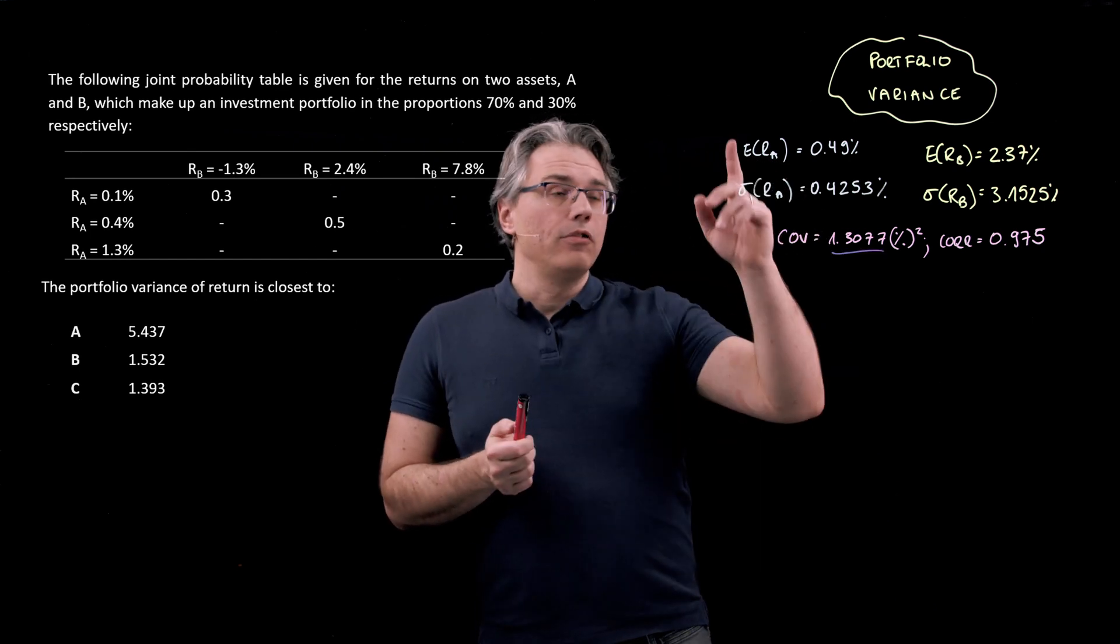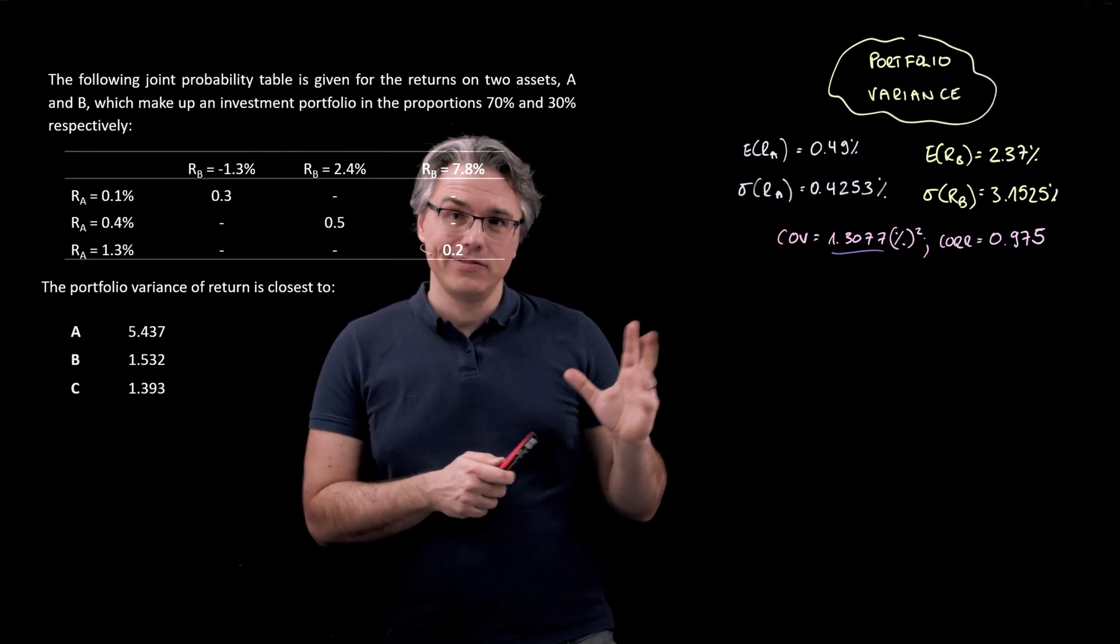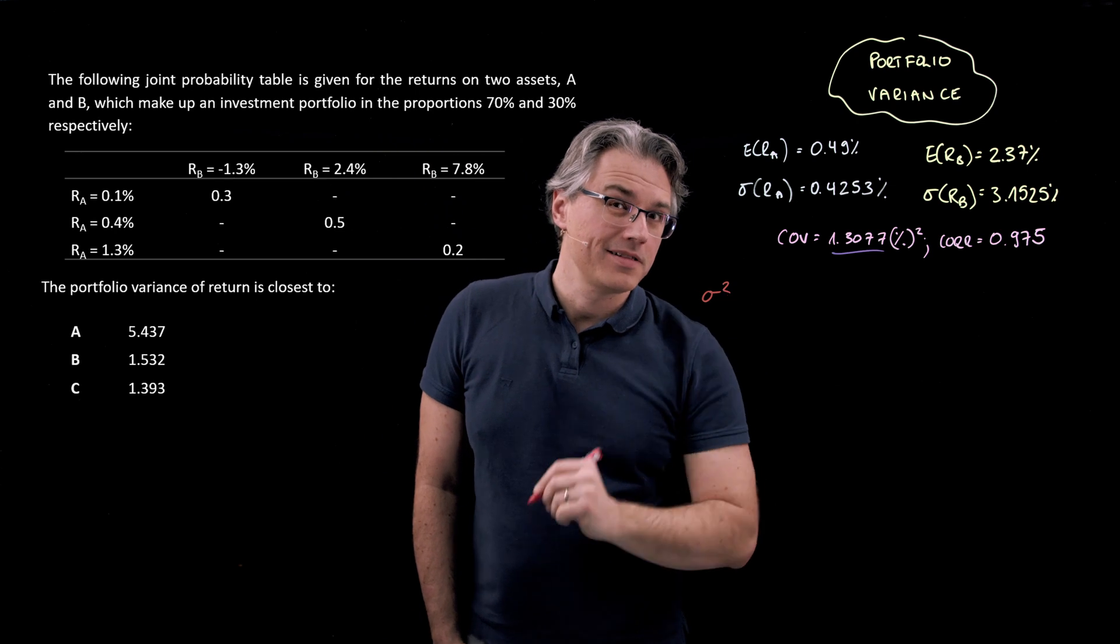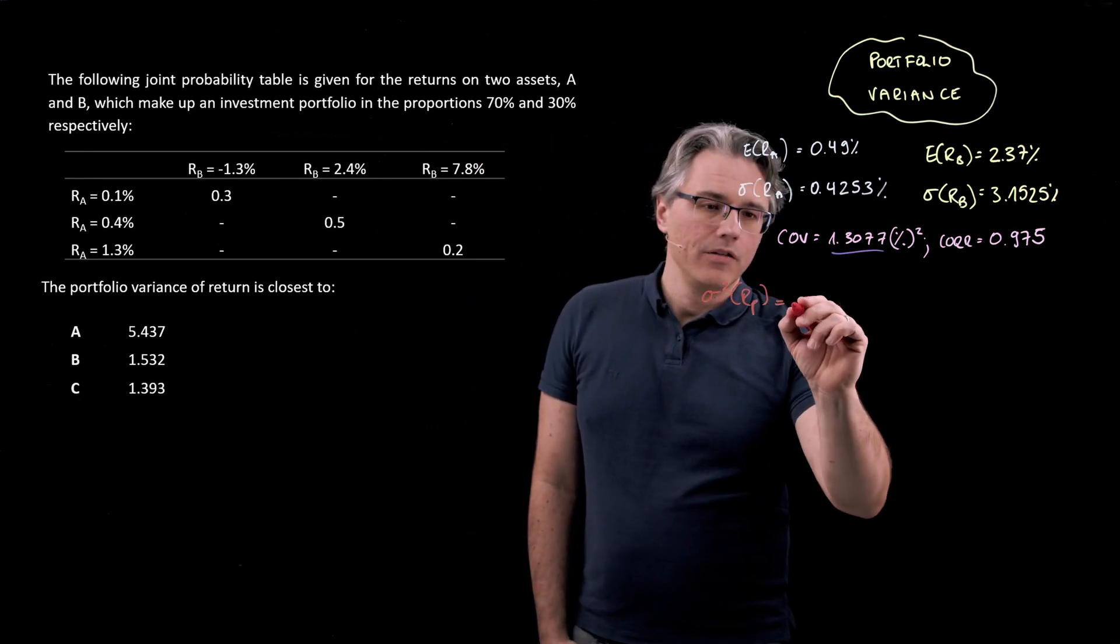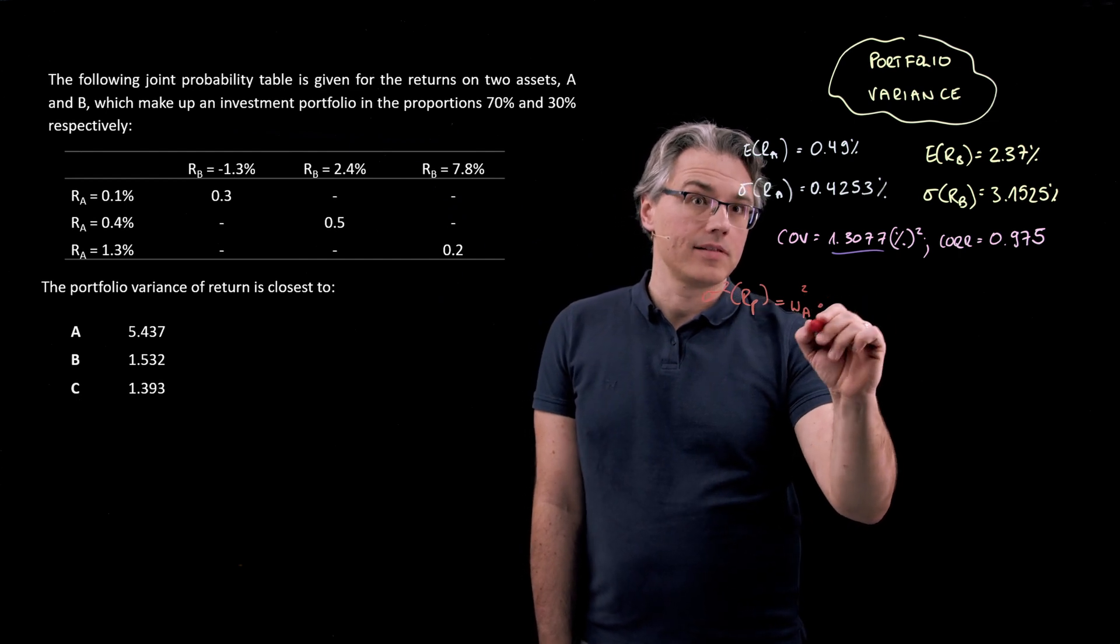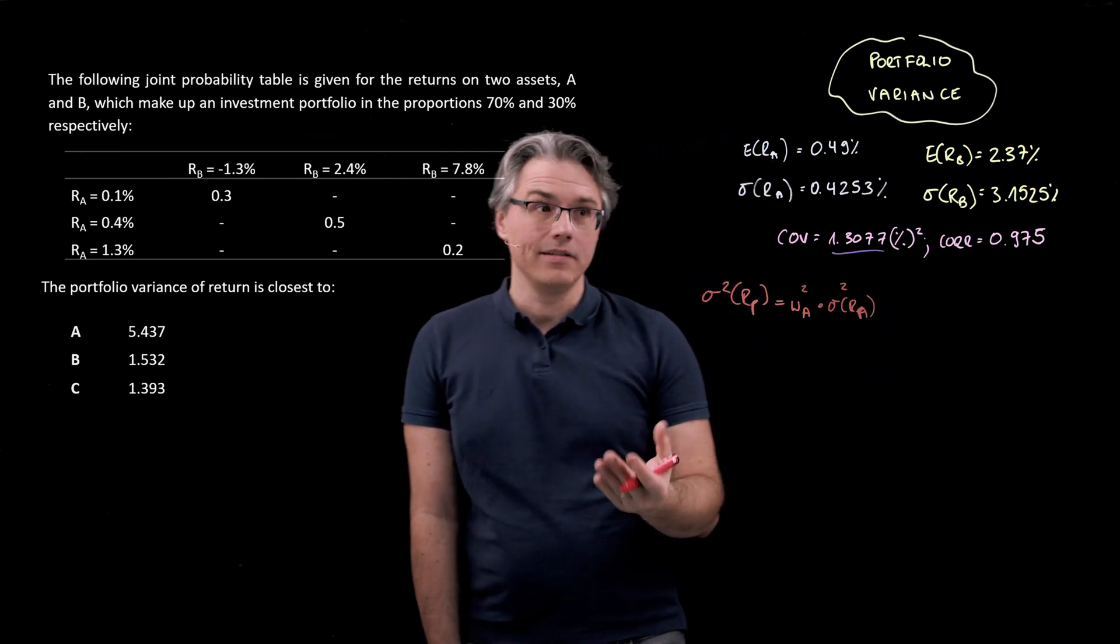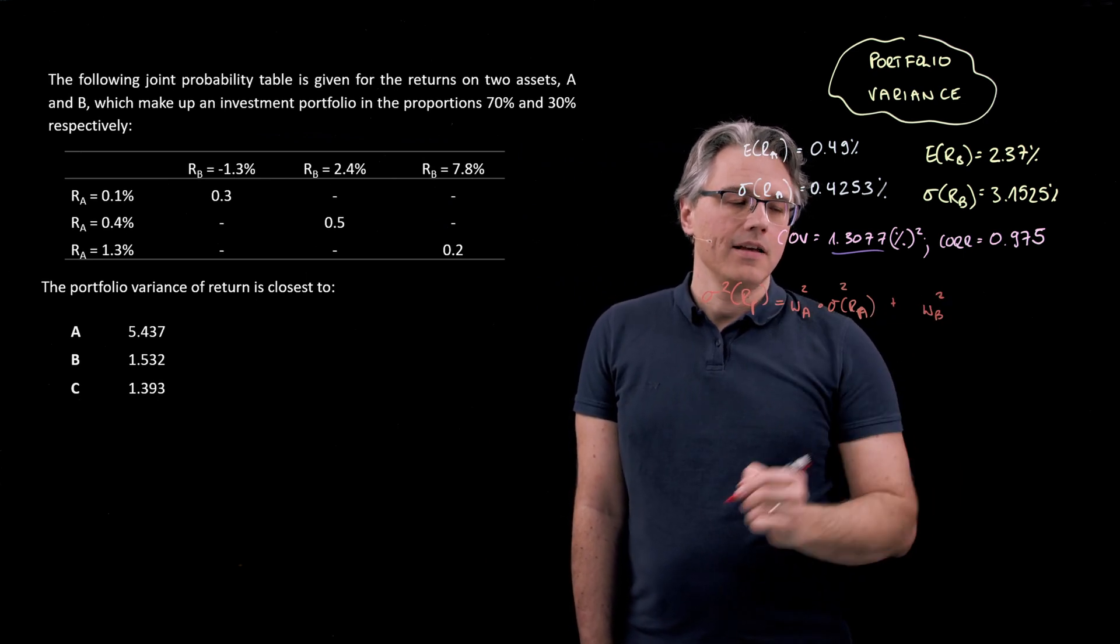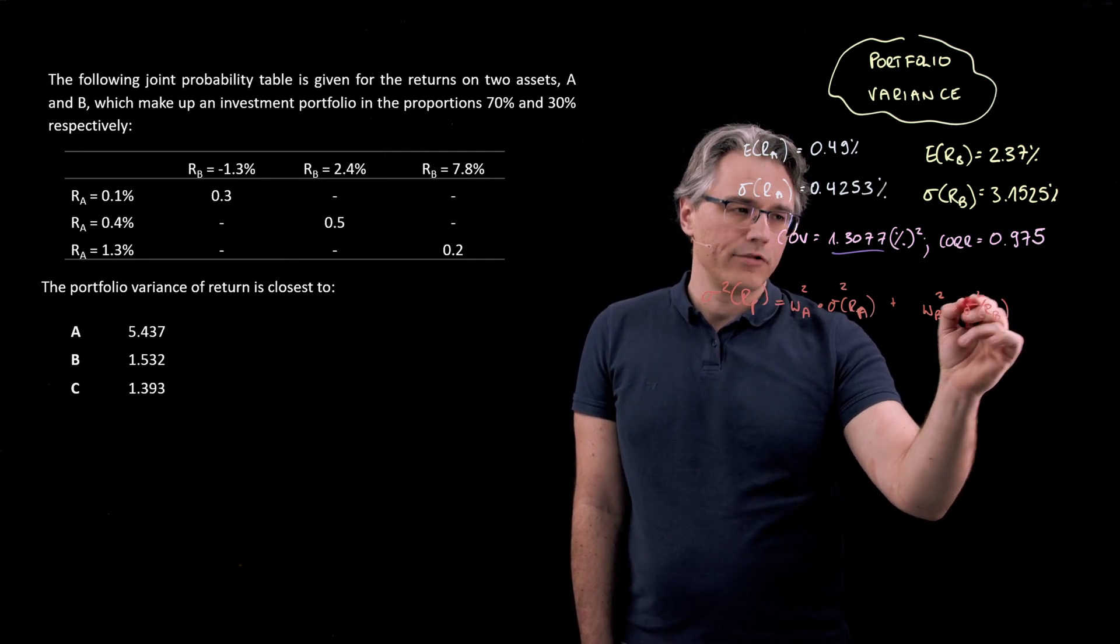The formula for portfolio variance in a two-asset portfolio, the one thing you really need to know, is given as follows. Portfolio variance, sigma squared of the returns on a portfolio, is going to be the weight of the first asset, asset A, squared times its standard deviation squared. So basically, its variance of returns, plus the same thing for the second asset: its weight squared times the standard deviation of its return squared, producing a variance.